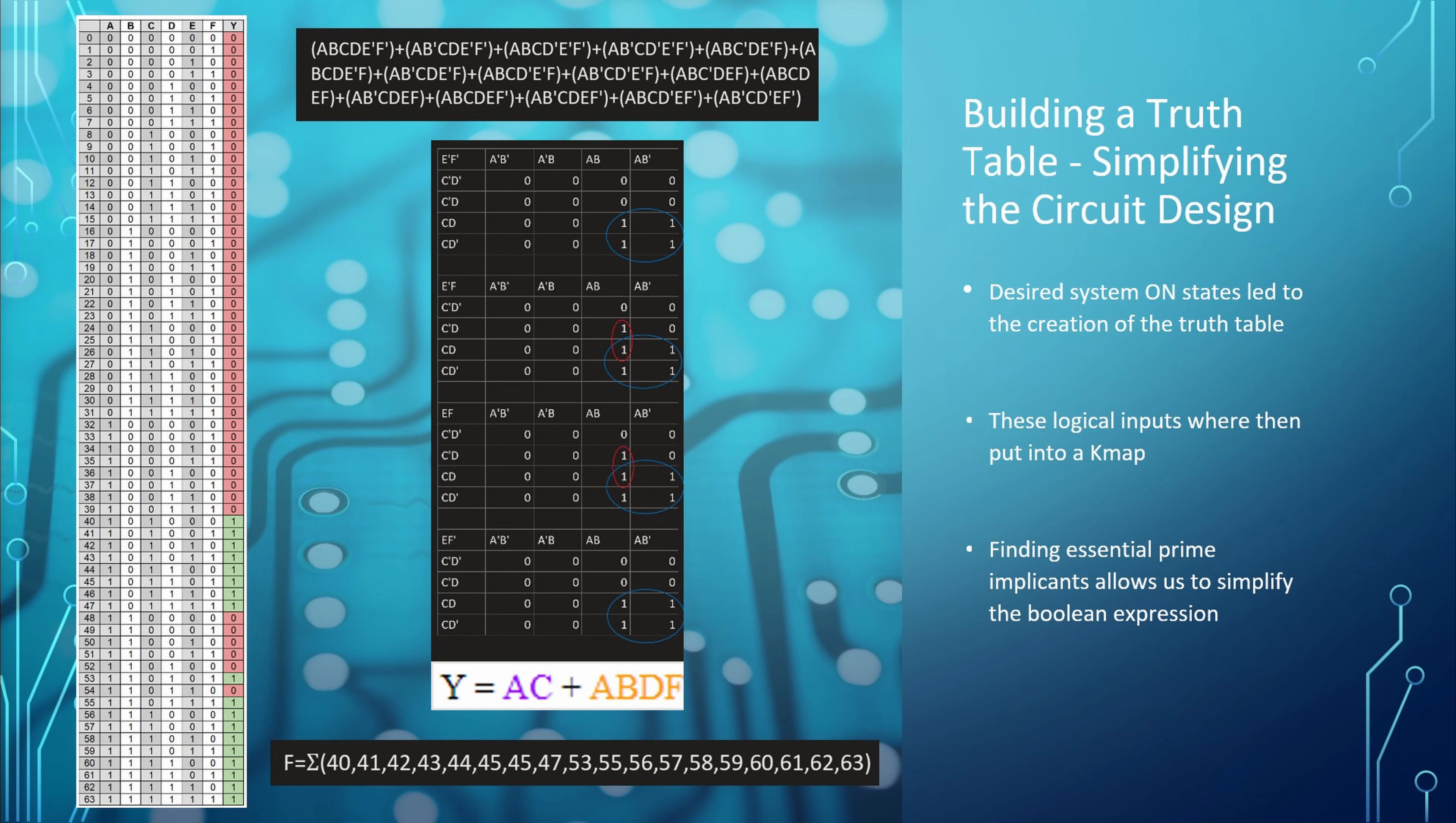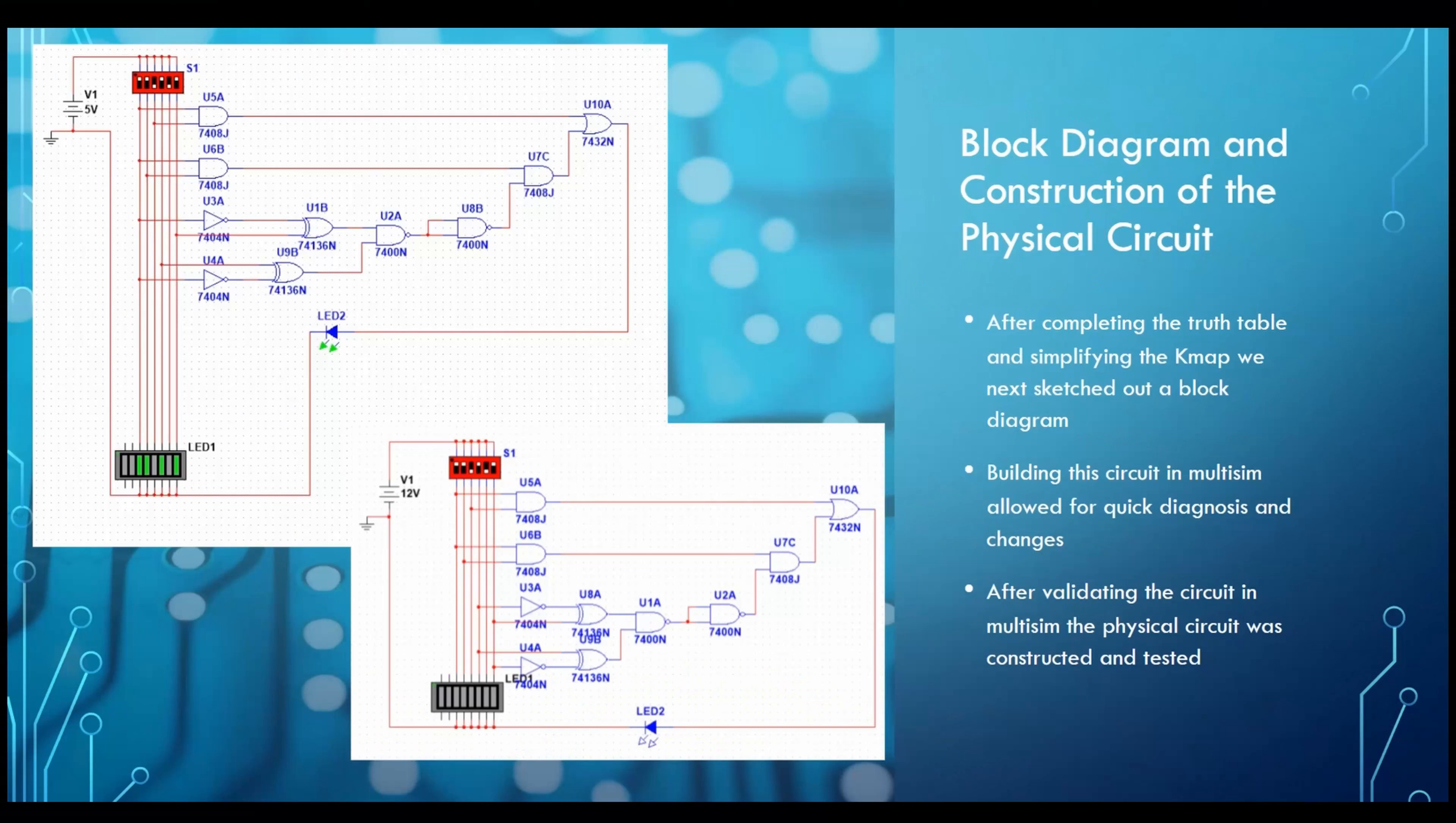In this slide, we're looking at the block diagram and construction of the physical circuit. After talking through our intended design and desired input combinations that would lead to the system being on, our next step was to sketch out a block diagram. The first configuration, shown in the bottom right photo, was promising, but I found that when inputs A and B were high, the irrigation system would be on. This did not align with the intended operation of the system.